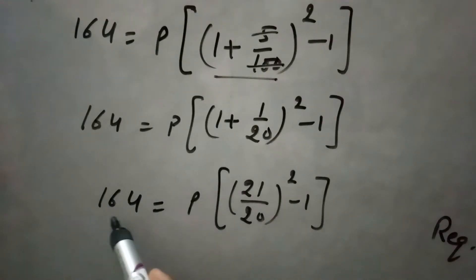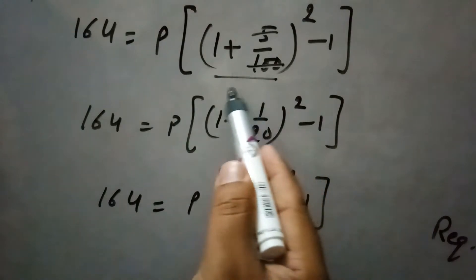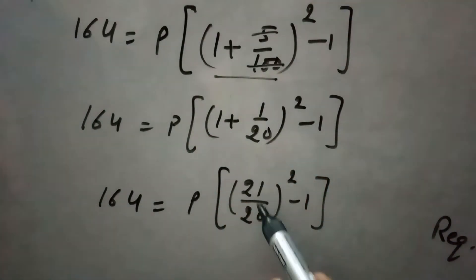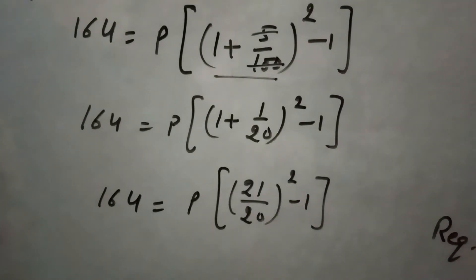So this is here, 164 equals to P into 21 upon 20. After finding the LCM and calculating, this becomes 21 upon 20 raised to power 2 minus 1. Now we will expand this square, so 21 square is 441 and 20 square is 400.